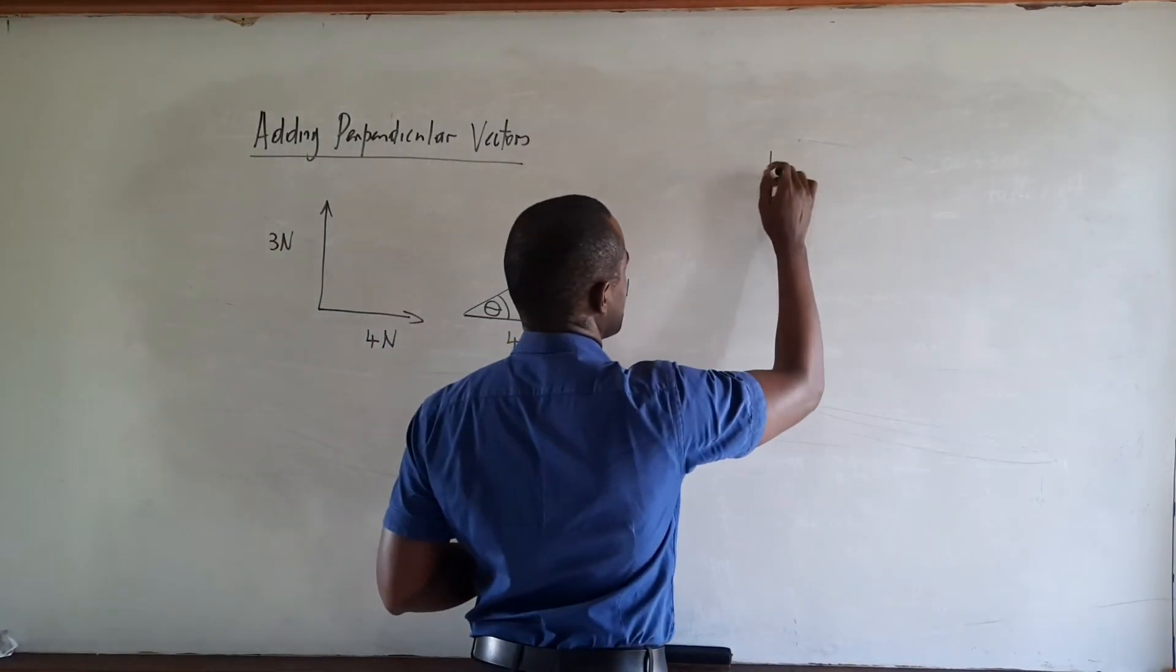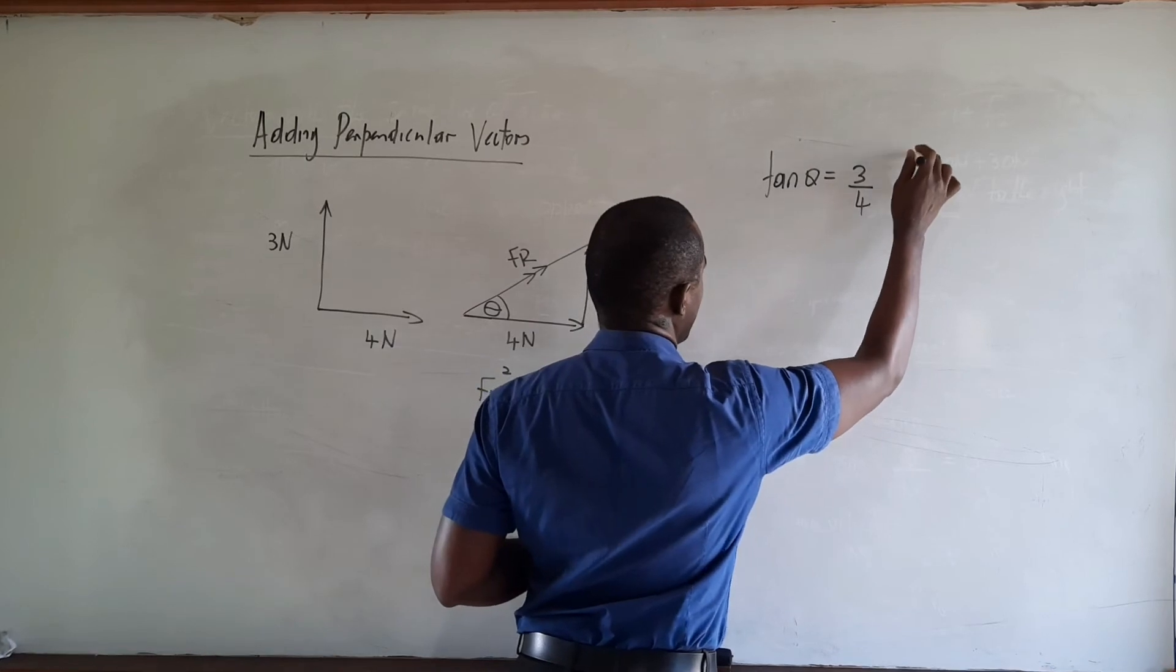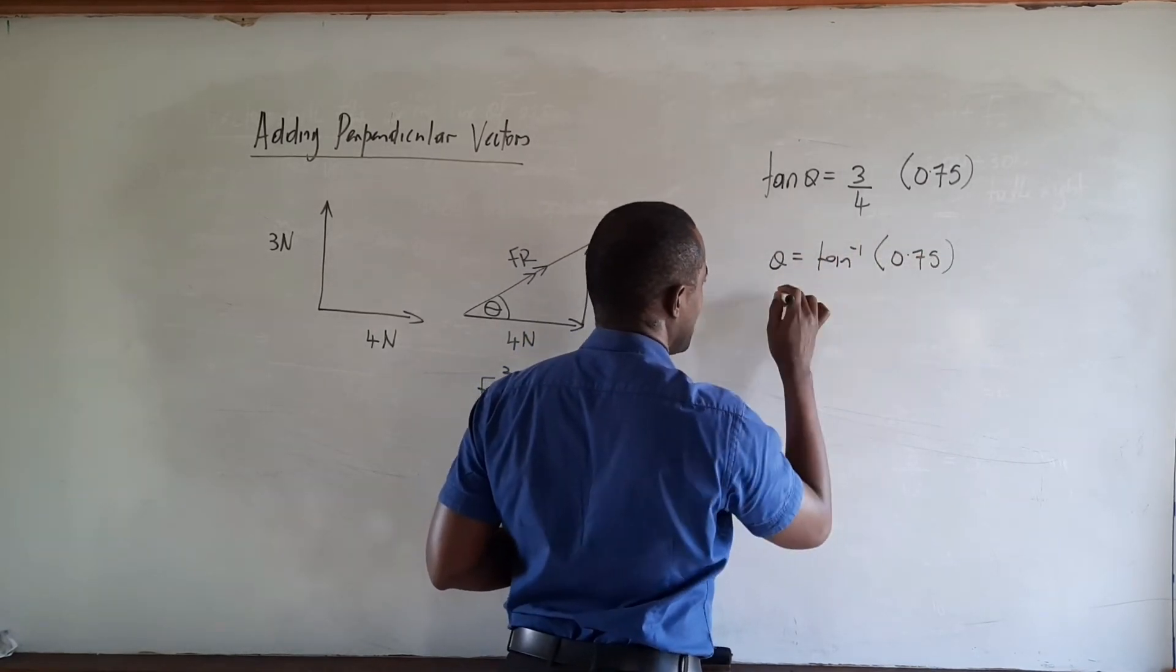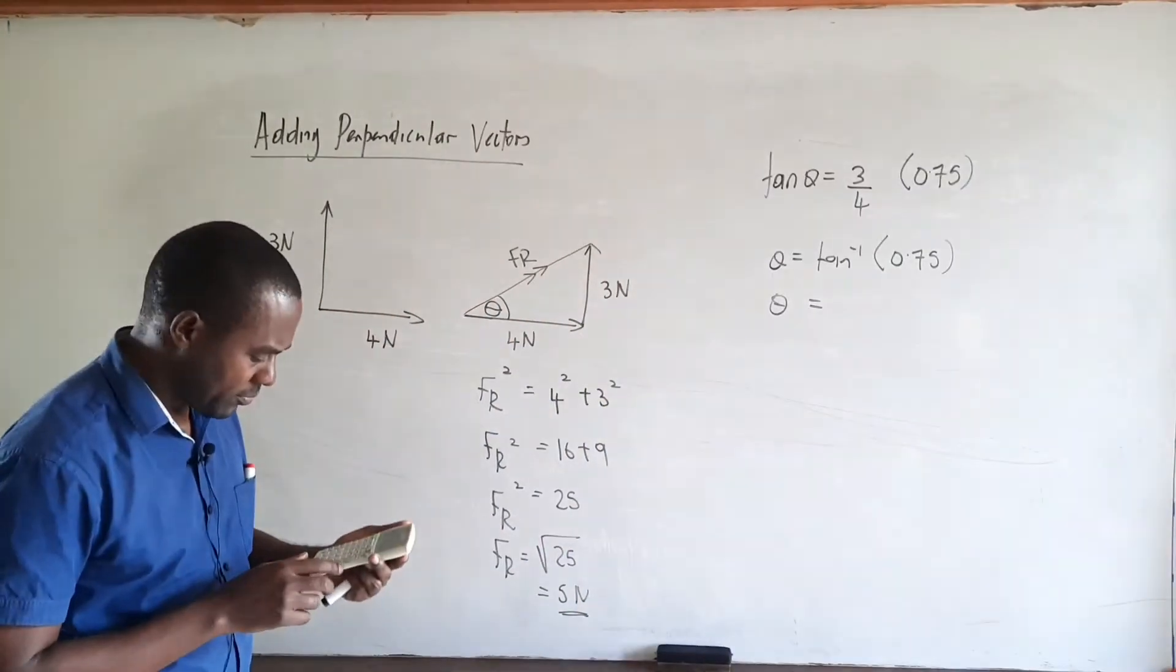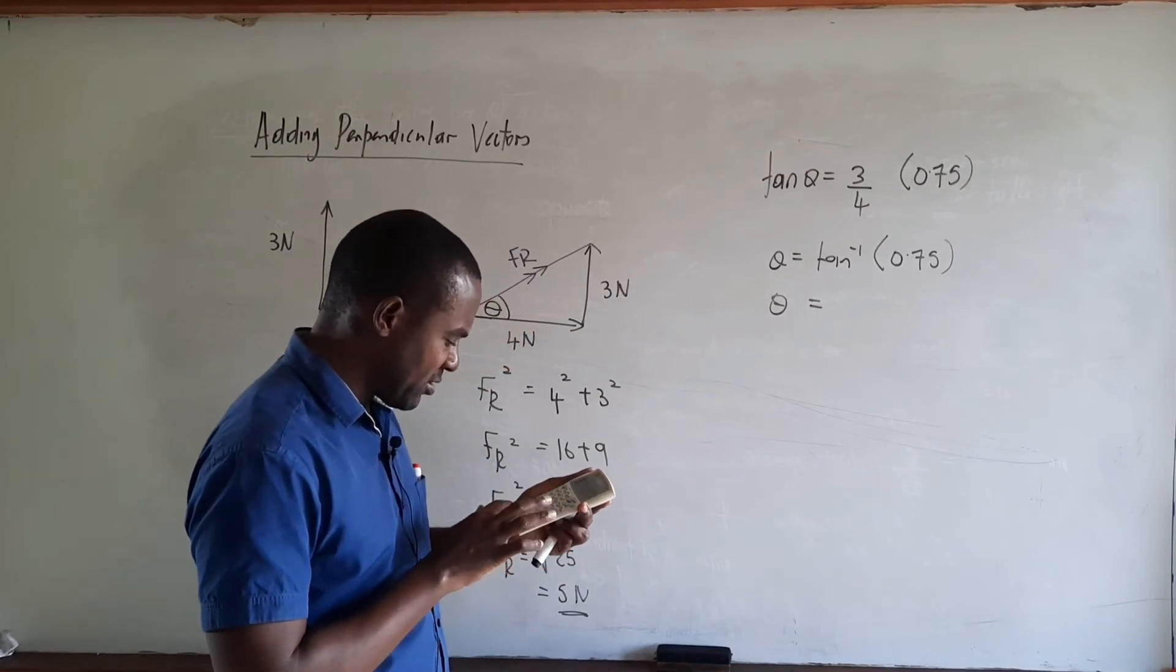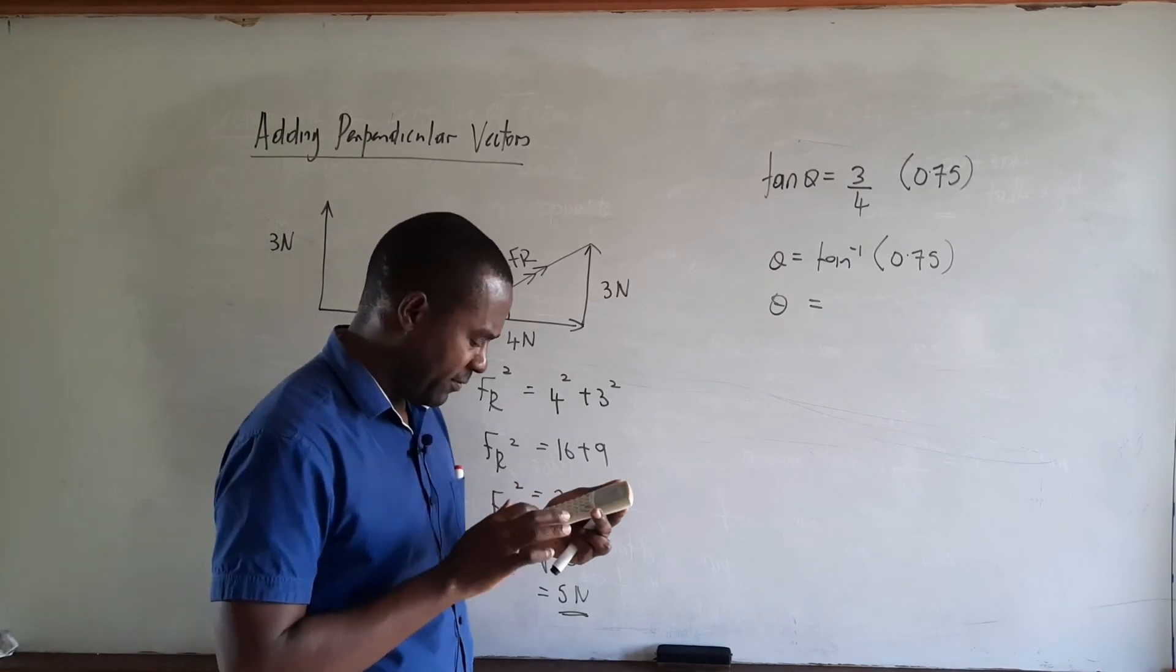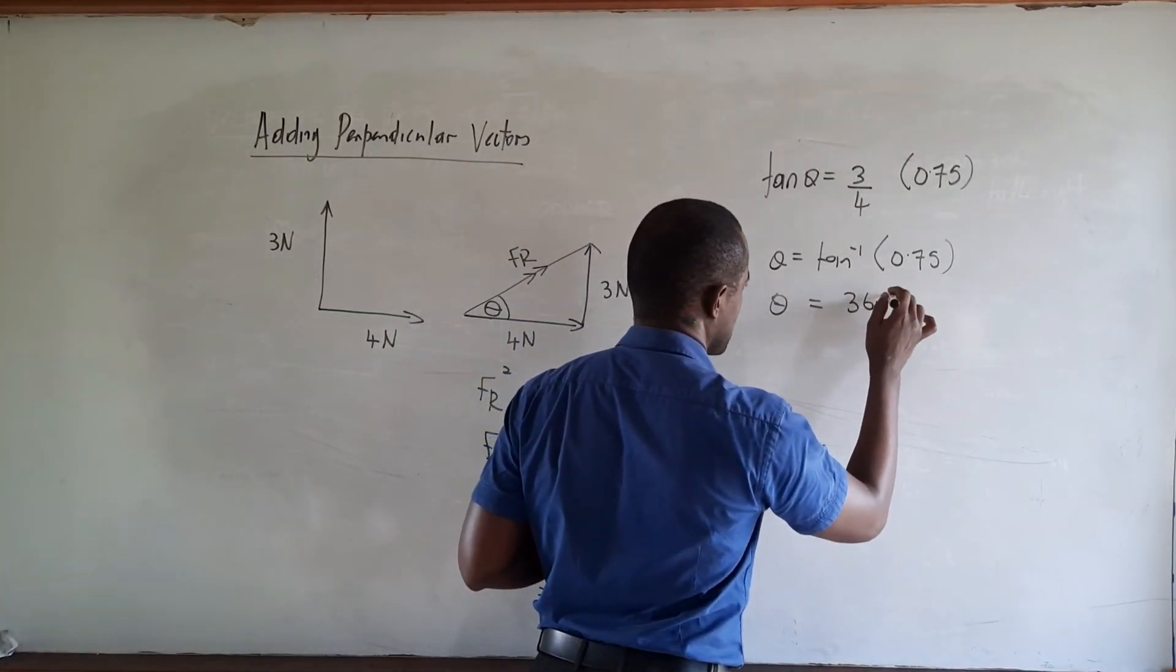So we have tan theta equals 3 over 4, or 0.75, and therefore theta is equal to the tan inverse of 0.75. We will go to our calculators and work out that angle. Tan inverse of 0.75, second function tan, 0.75, that gives us 36.9 degrees.